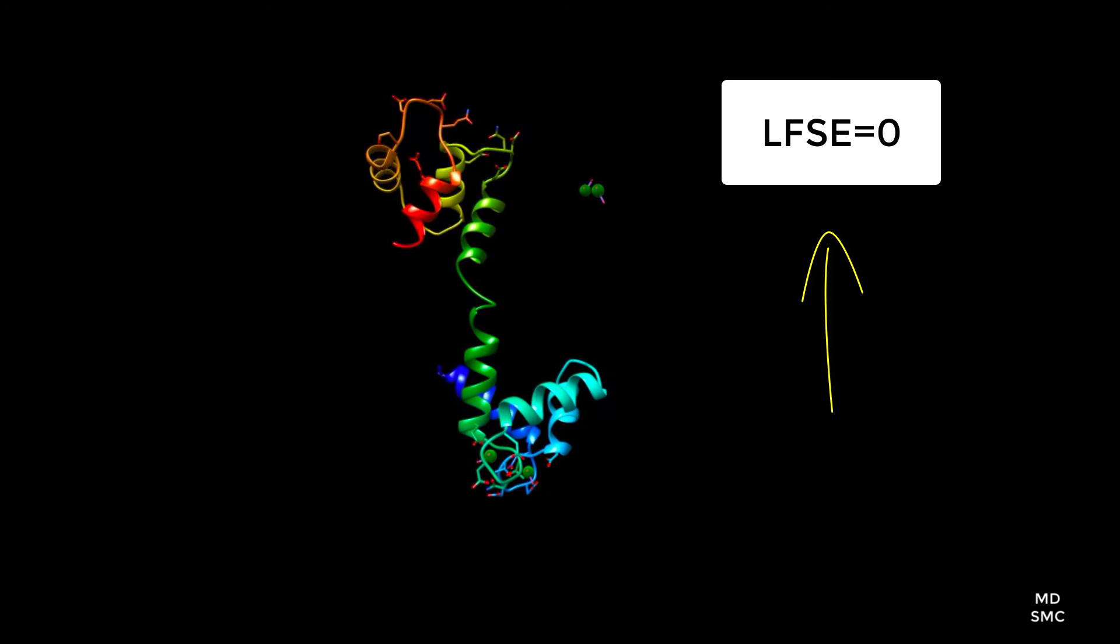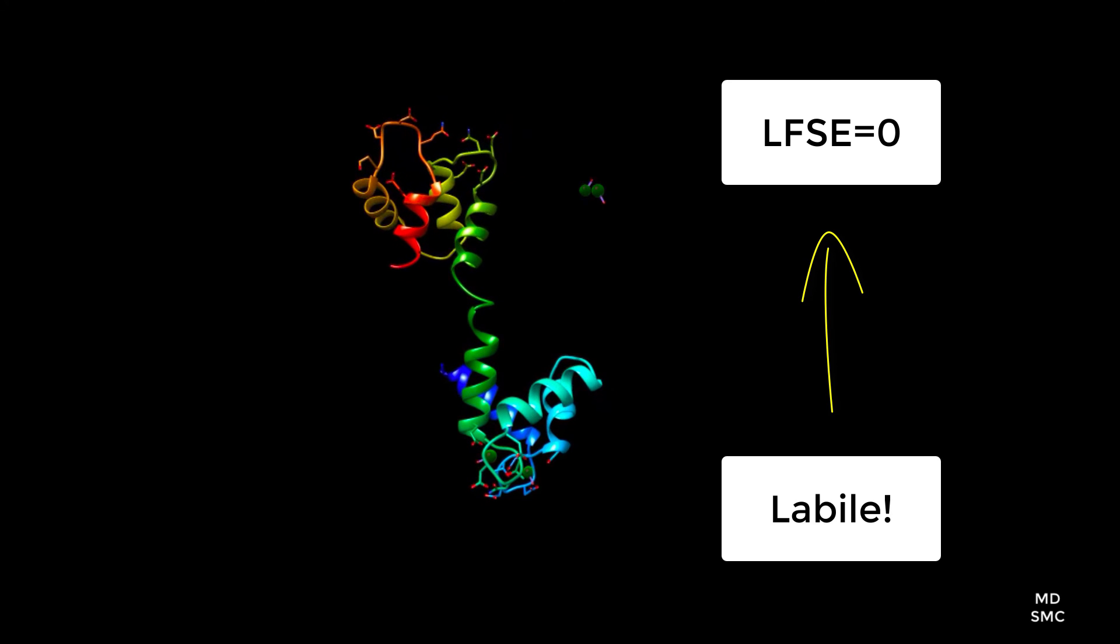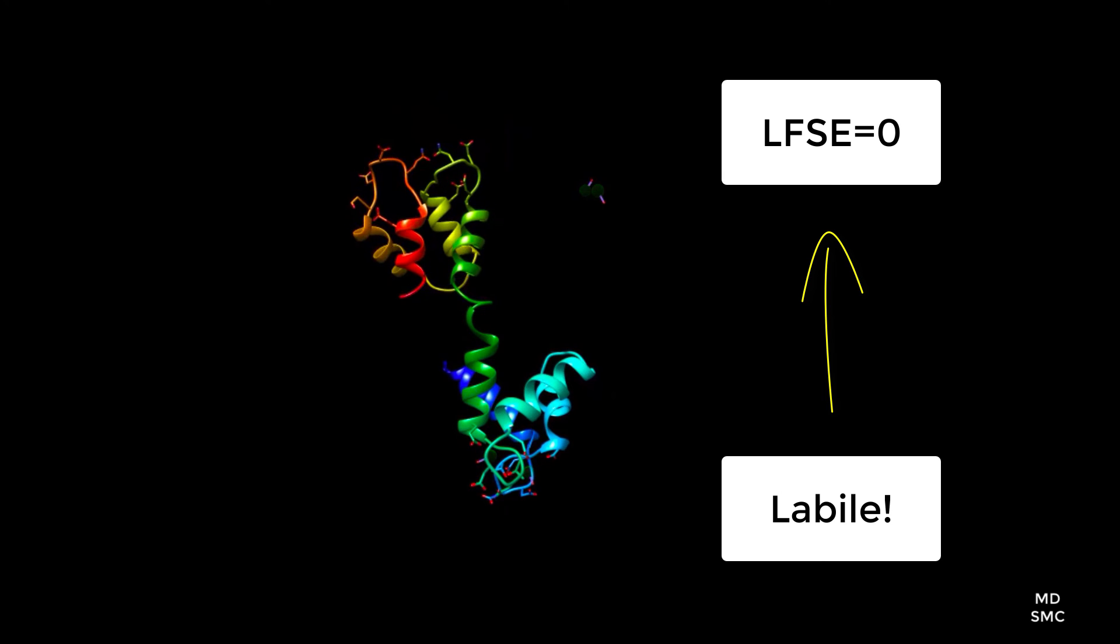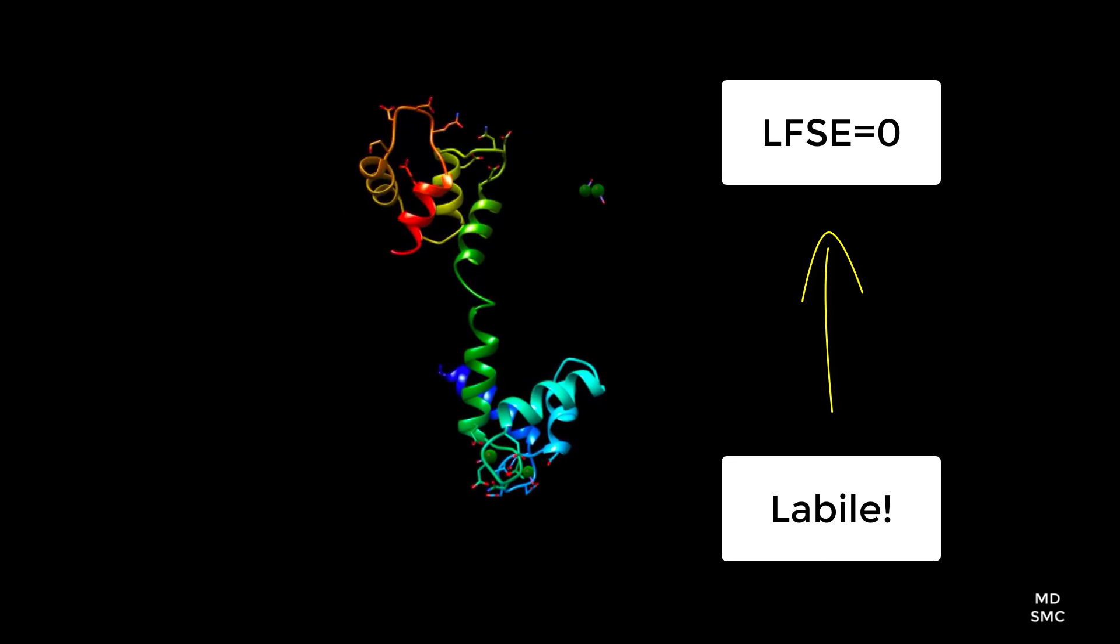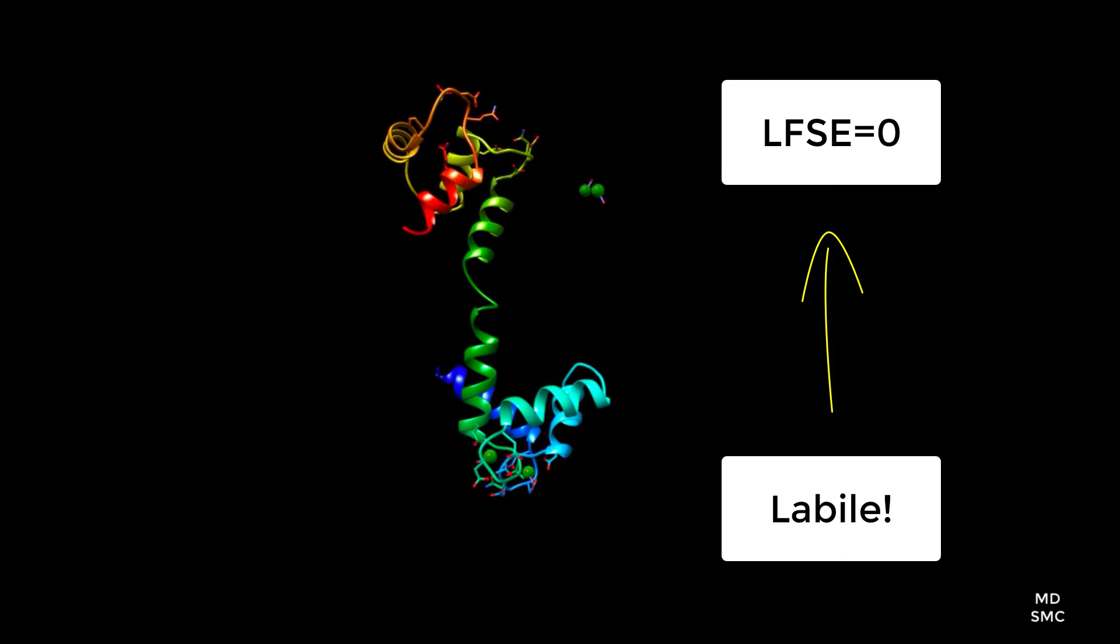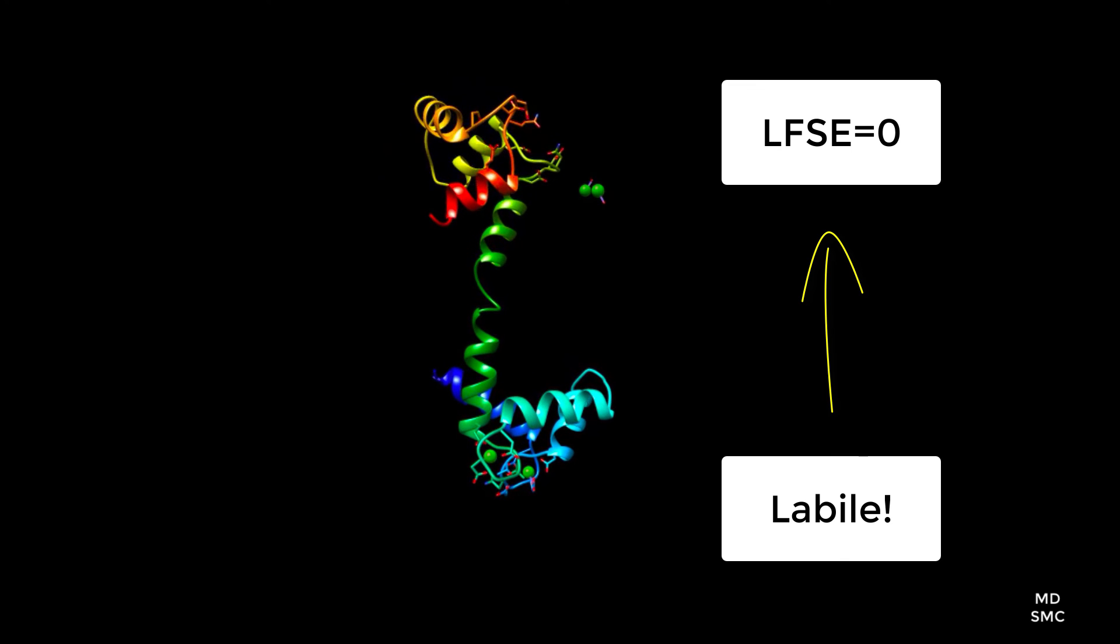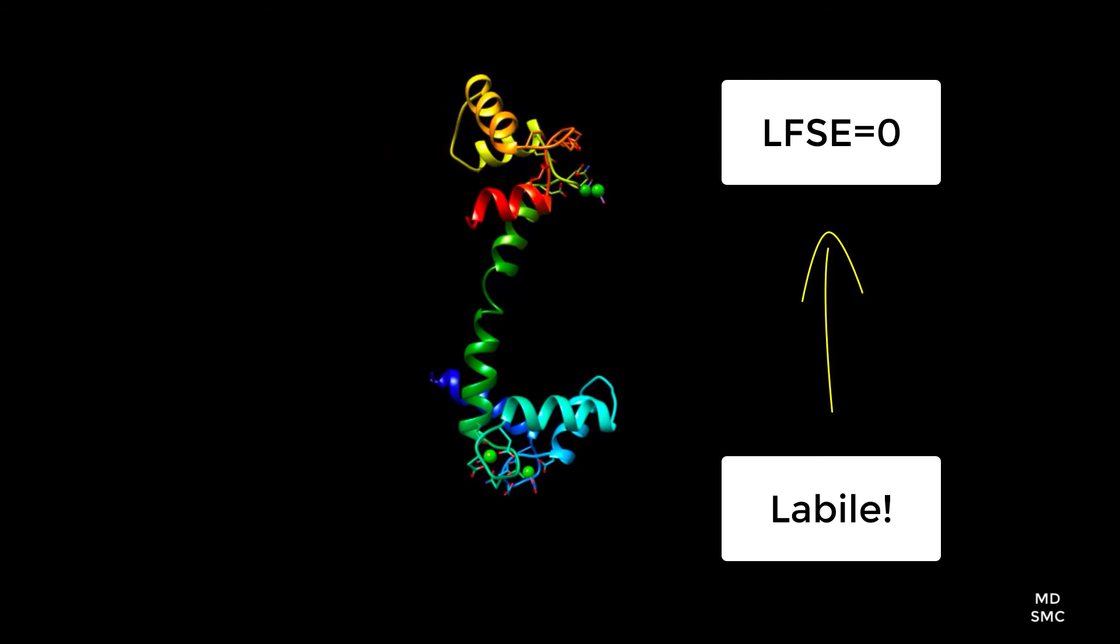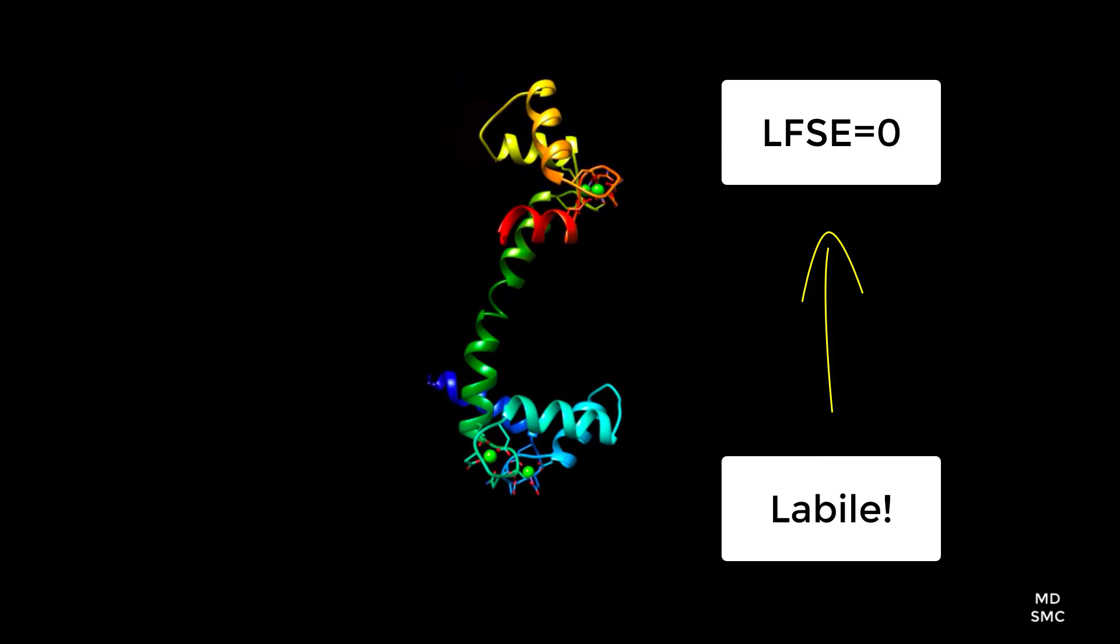This means that the calcium ion is labile and the coordination bonds can be broken and re-established quickly and efficiently. This is important when considering how often and how quickly the proteins must convert their shapes to forward the cascade of calcium signal transduction.